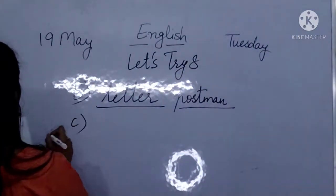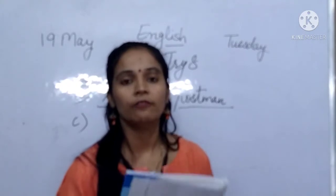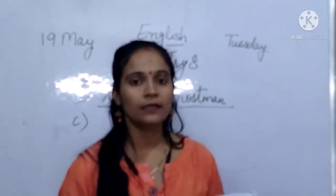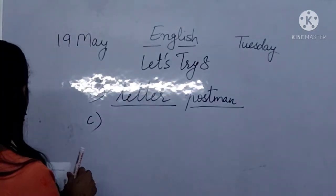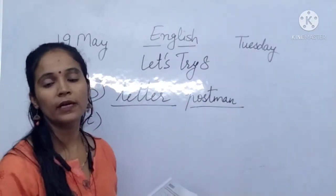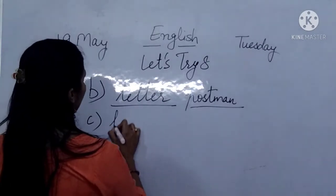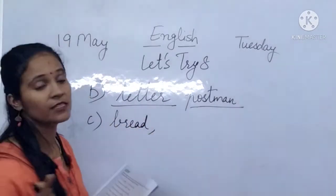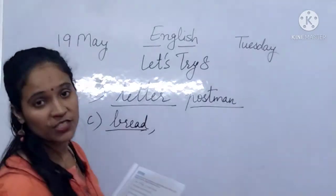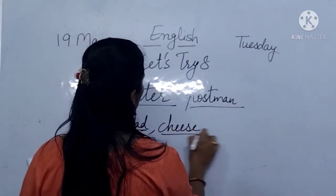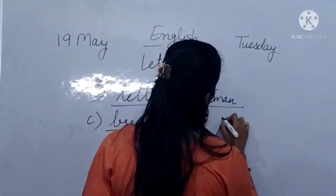Sentence C: we had bread and cheese for breakfast. There is no proper naming word in this sentence. Common naming words are: bread — koi specific bread brand ka name nahi hai — and cheese, and breakfast. These are all common nouns.